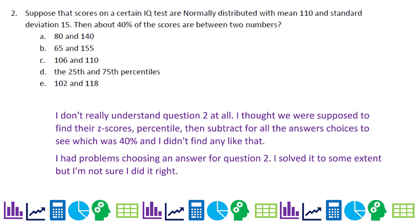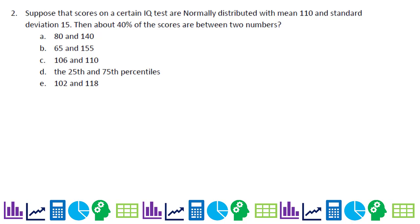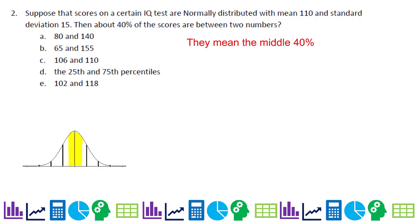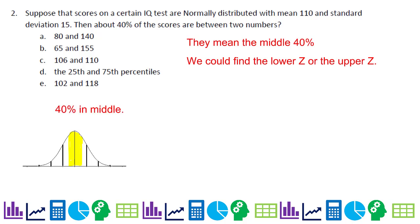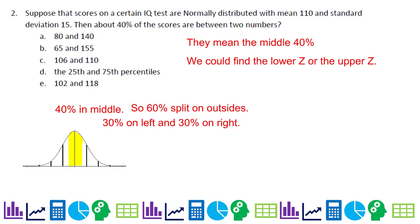Number two: scores on a certain IQ test are normally distributed with a mean of 110 and standard deviation of 15. About 40% of the scores are between what two numbers? Many people are confused here. They mean the middle 40%, which leaves 60% outside — 30% on the left and 30% on the right. So we want 70% below the upper Z.